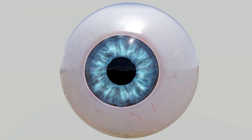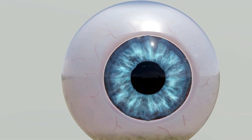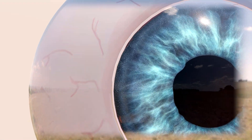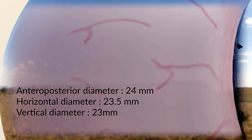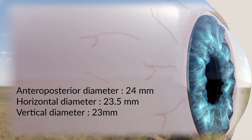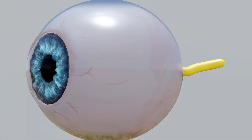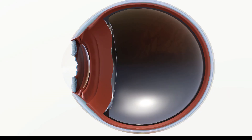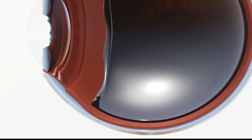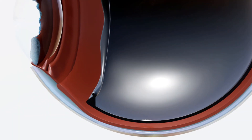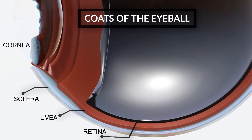The eyeball may be compared to a camera but is much more advanced than any man-made camera. It is roughly spherical in shape with the diameters mentioned on screen. We can divide the eyeball into the layers making up its wall and the inner contents. The layers or coats may be divided into three parts: the outer fibrous coat made up of the sclera and cornea, the middle vascular coat called uvea, and the inner nerve layer known as retina.